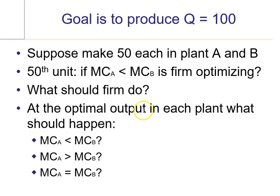So at the optimal in each plant, what should happen? Should this be the case that marginal cost in plant A is lower than marginal cost in plant B? No, because in this scenario...